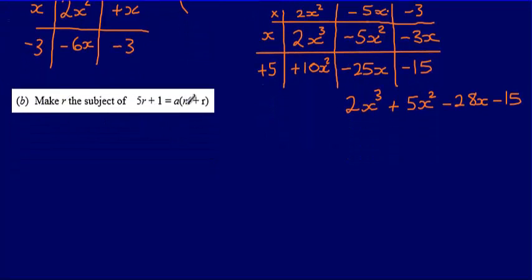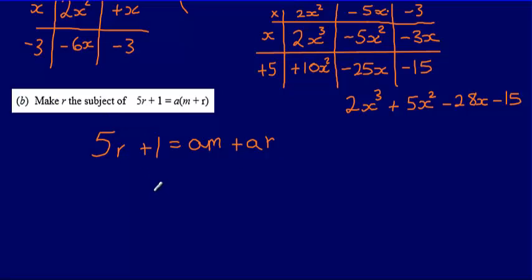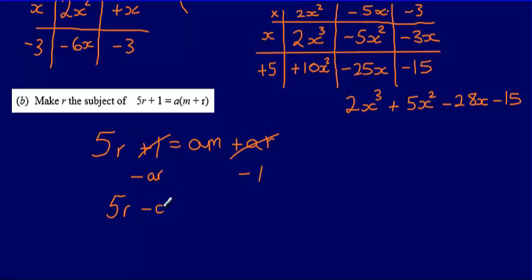For part B, I'm asked to make R the subject of the formula. I've got 5R + 1 = A(M + R), and expanding the bracket gives me AM + AR. When making R the subject, I want to have R on its own on one side of the equal sign. So I'm going to get all of the terms with R in them — AR and 5R — on one side, and everything else on the other. Subtracting AR and 1 from both sides gives me 5R minus AR equals AM minus 1.